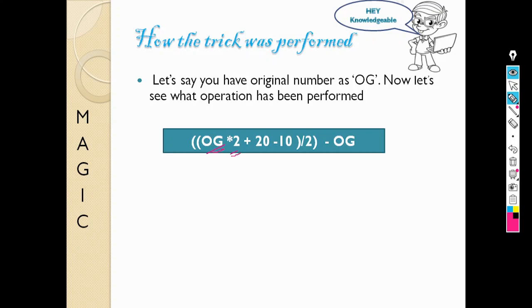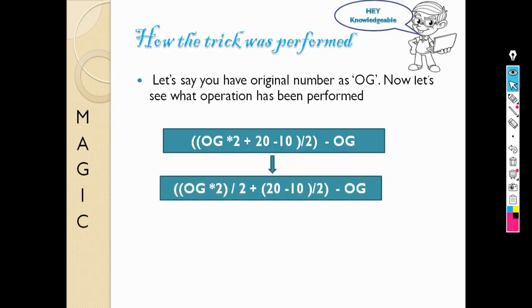Then I told you to add 20, then subtract 10, and the whole number divided by 2, and then subtract the original number. Then if you see manually, you will find that this whole thing can be written as two separate parts.